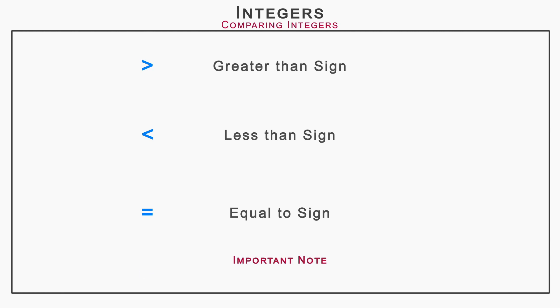Important note: when an arrowhead is used to compare integers, the arrowhead must always point towards the smaller number.